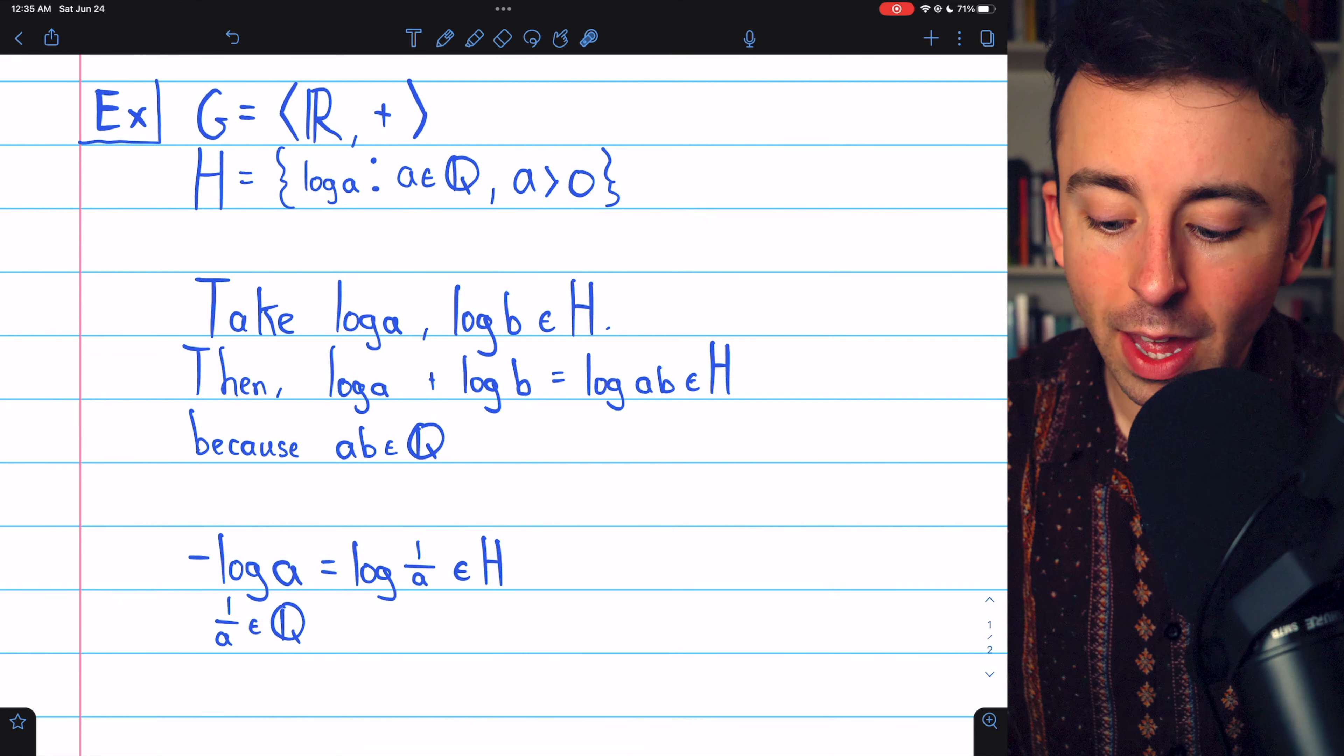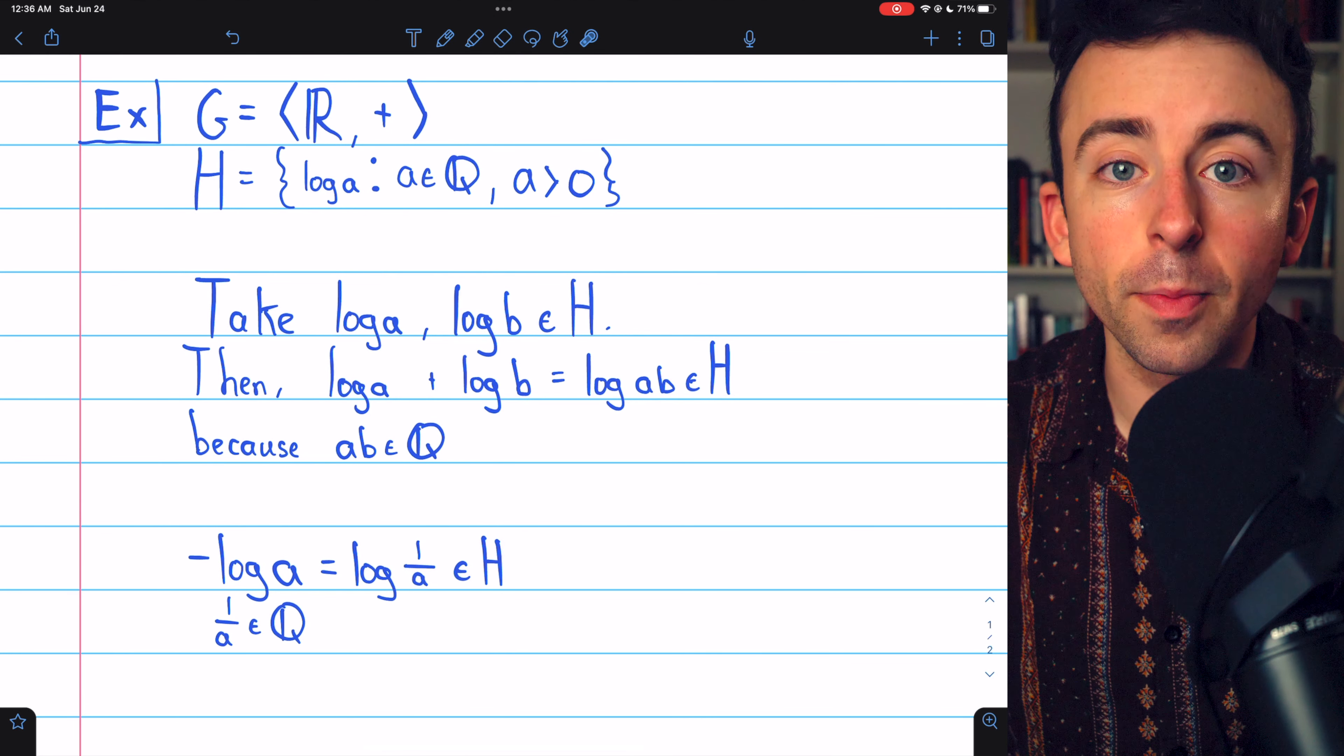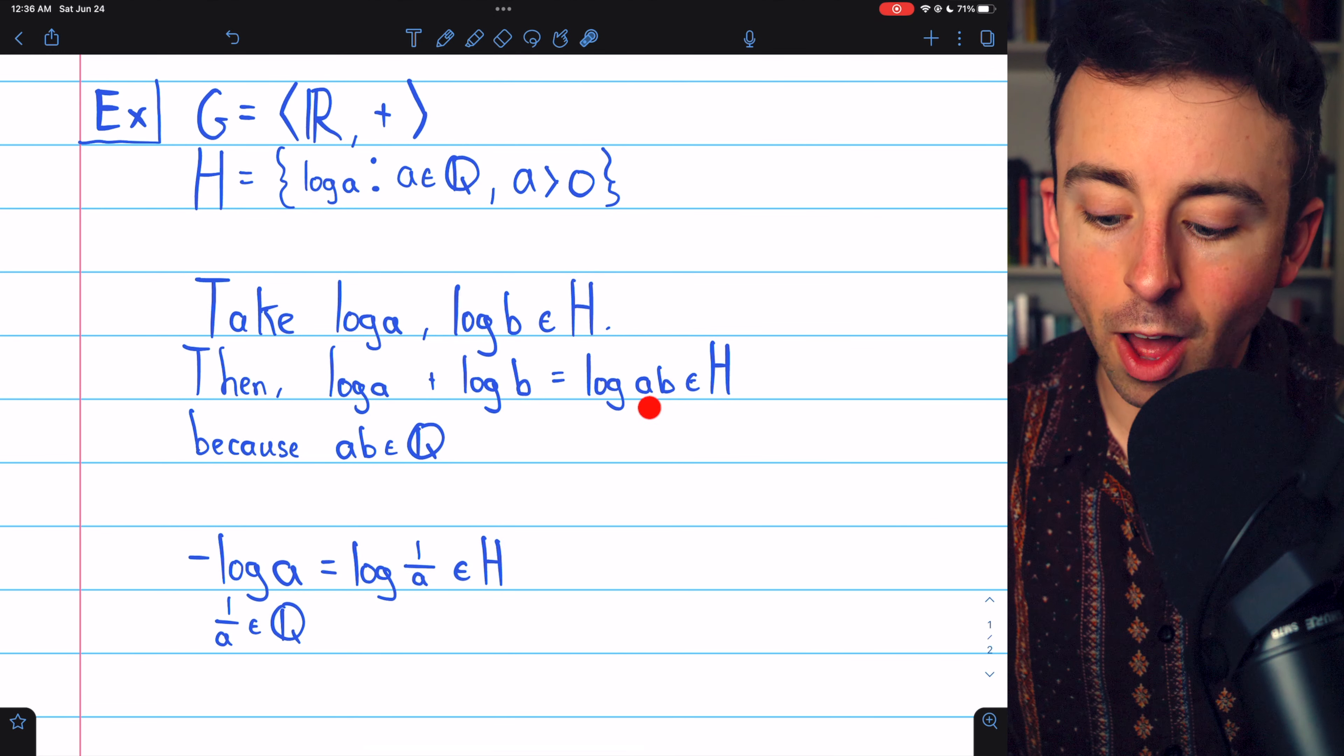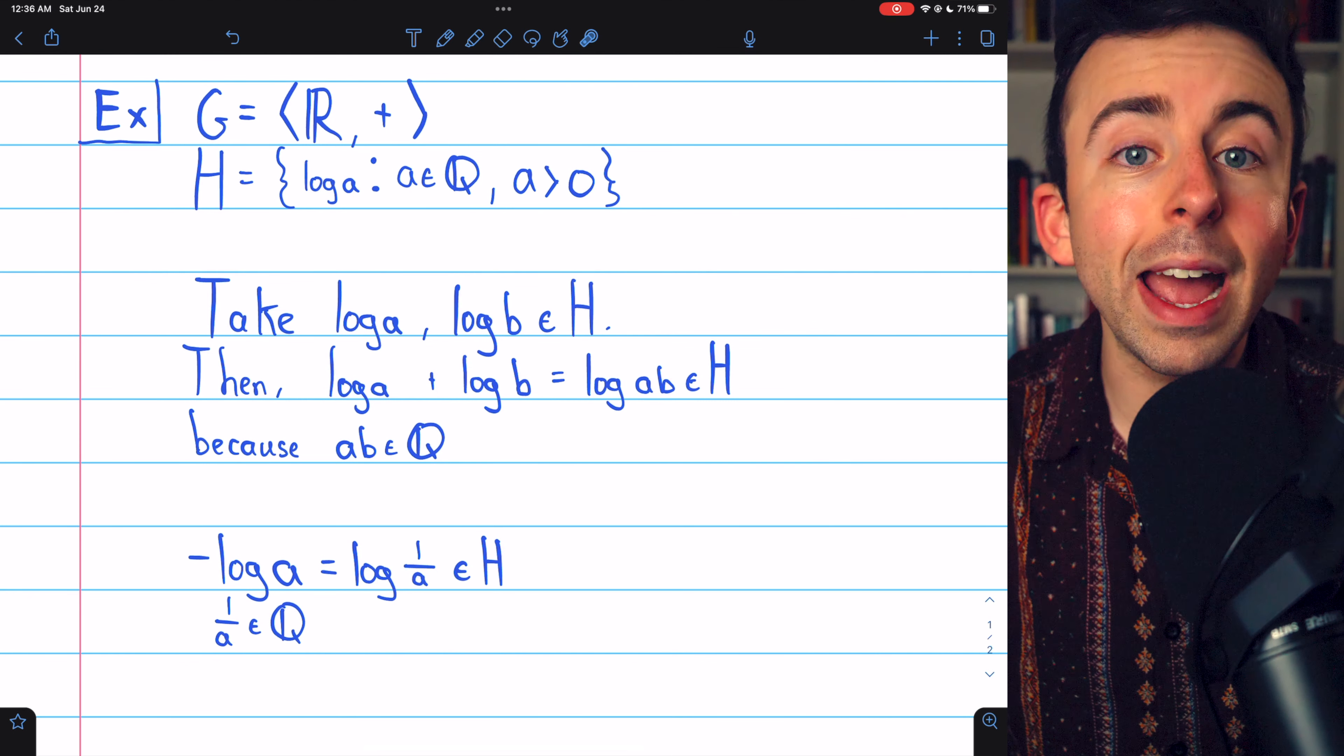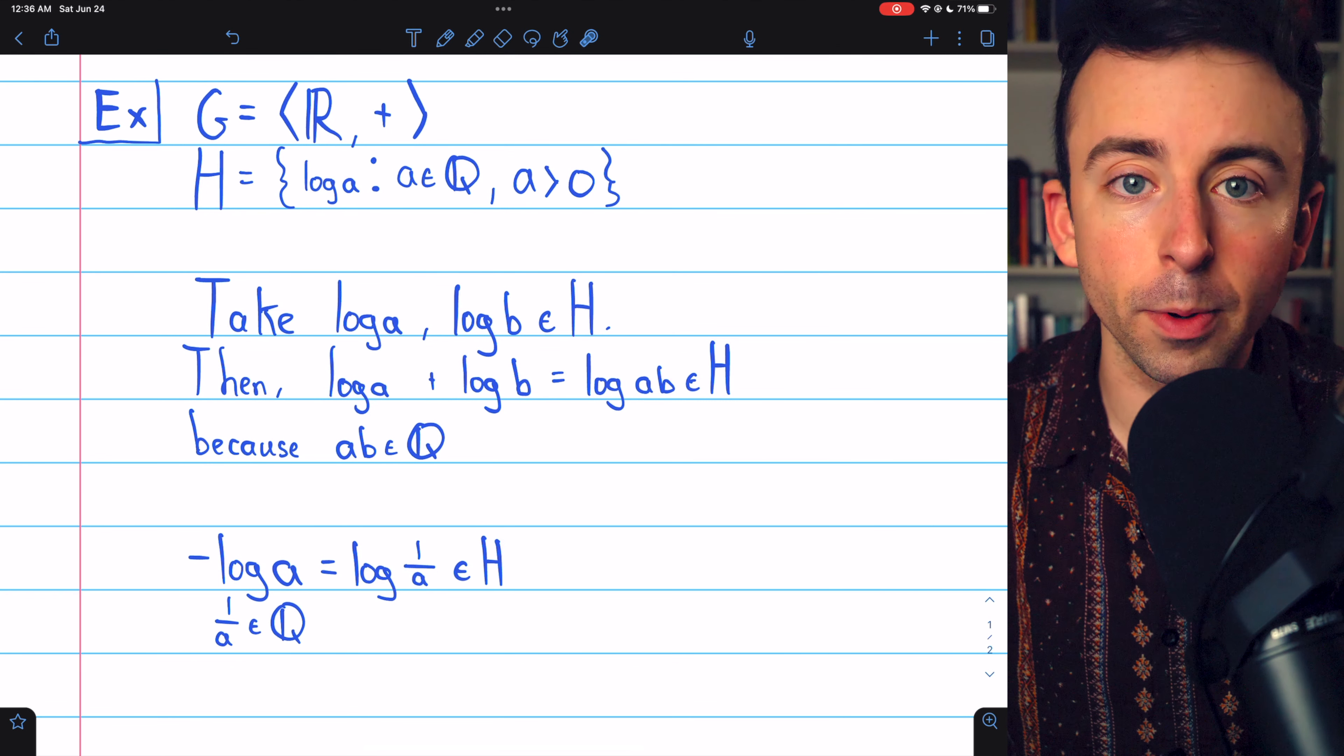Since a and b are both positive, ab is positive also. It's a positive rational, so log ab is an element of H. So H is closed under the operation.